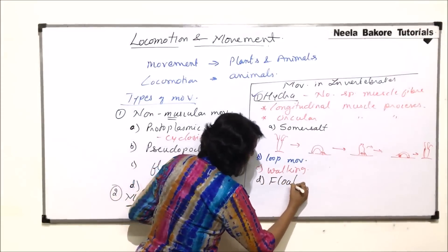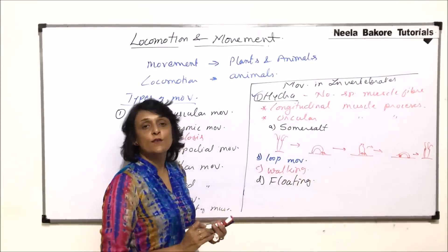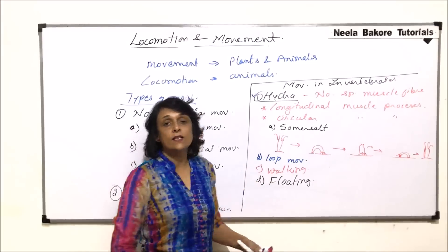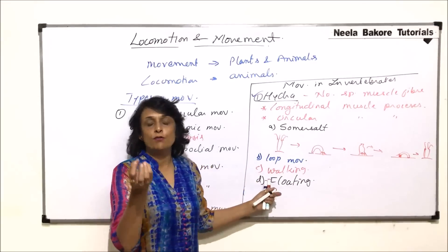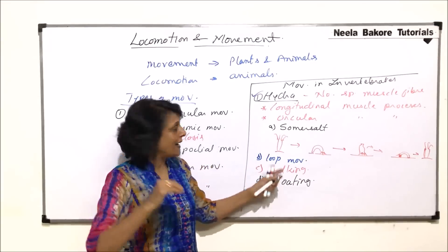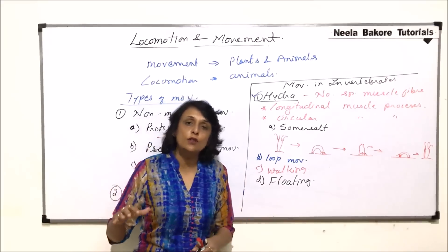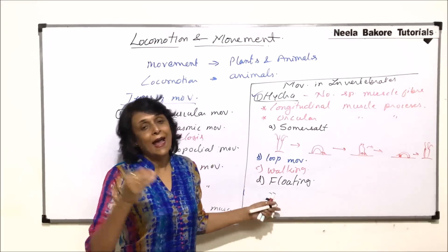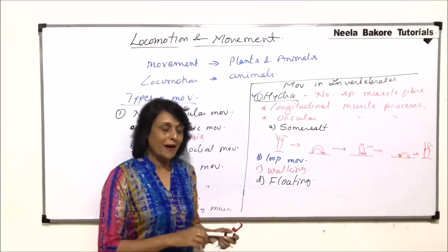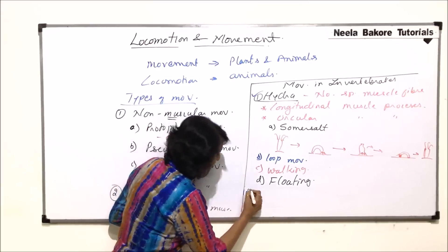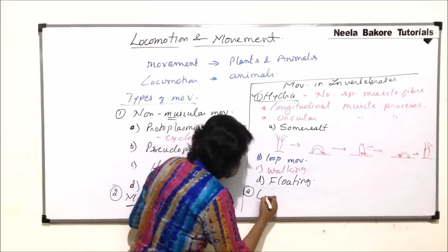The fourth type is floating. When hydra has to move from its position, it produces an air bubble at the lower end. Because of the air bubble, it detaches from the substratum and floats in the water. When it has to attach to a new substratum, it goes and binds there. The second example we want to take up is the earthworm.